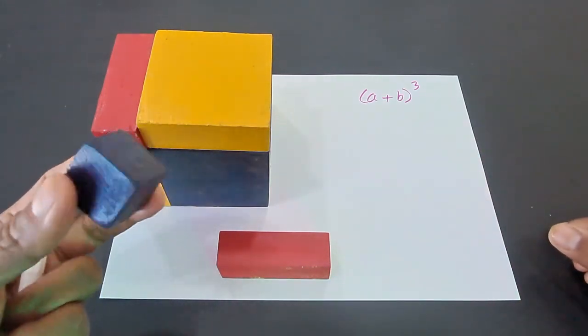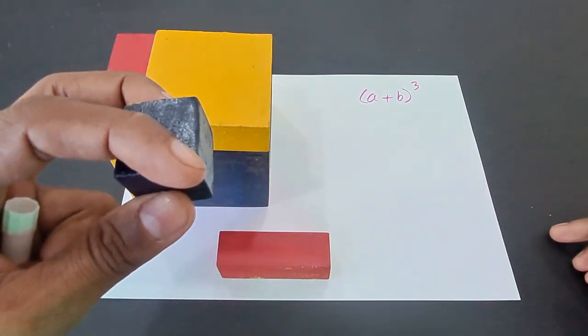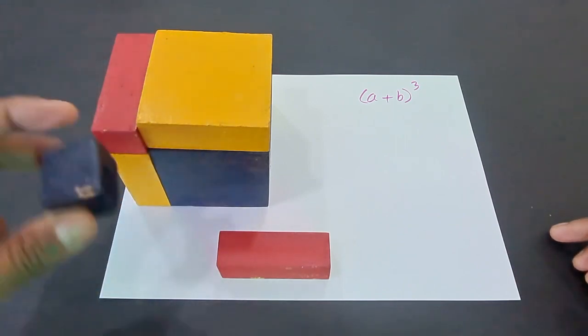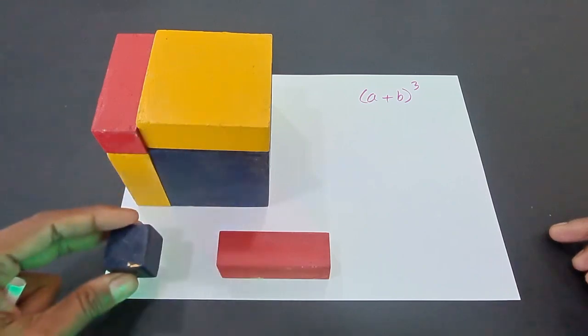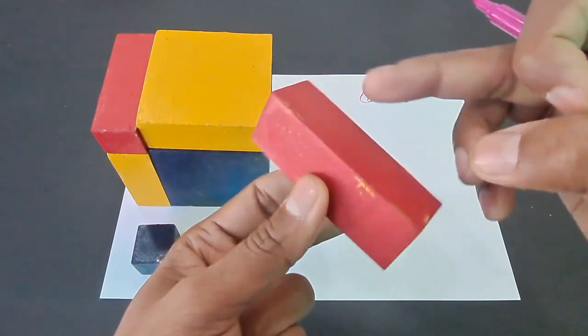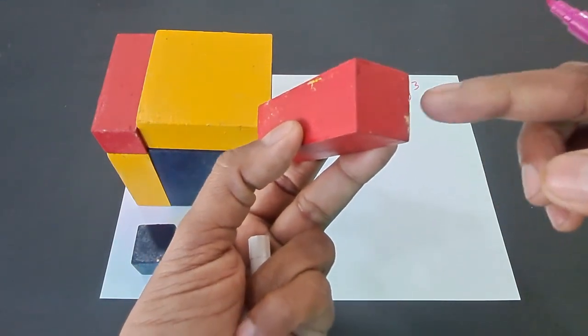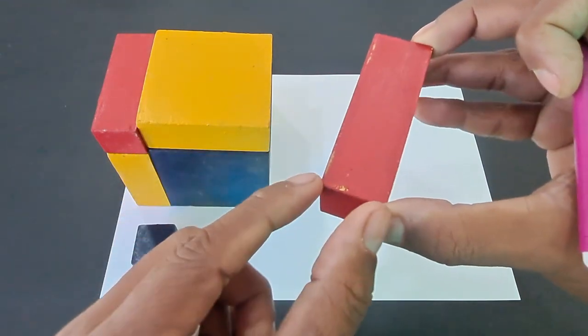These are the smaller shapes which you can see. This is a small cube and this small cube has the side b, because b is the smaller length and a is the larger length. This is a cuboid whose dimensions are: this is a, the length, and then this is b, and this is also b, so a, b, and b.